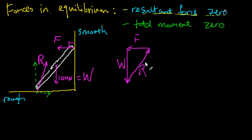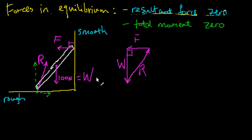Now, sometimes with a triangle like that it might be enough to solve the problem using Pythagoras' theorem or a scale diagram. In this case we have a right angle in the triangle, since F is horizontal and W is vertical, and we know W is 100 newtons. But we don't know F, we don't know R, and we don't have the angles — so there isn't enough information to solve the triangle yet.